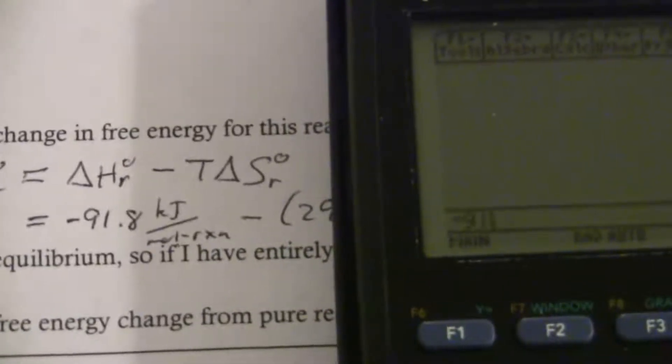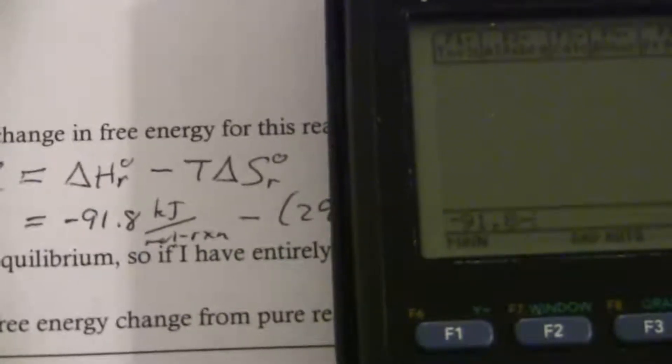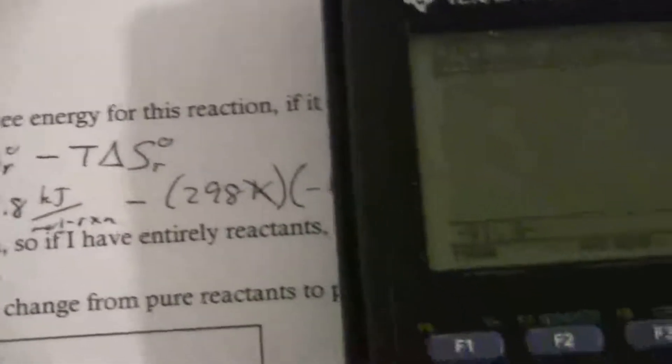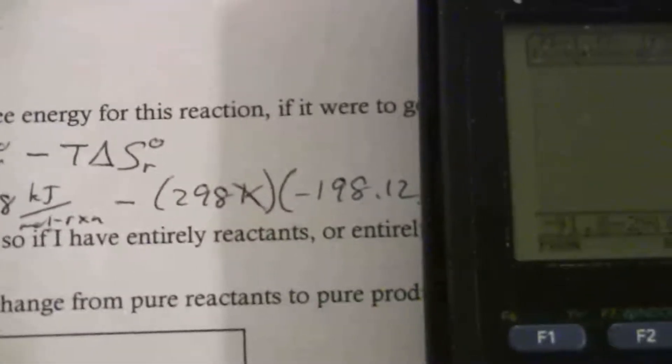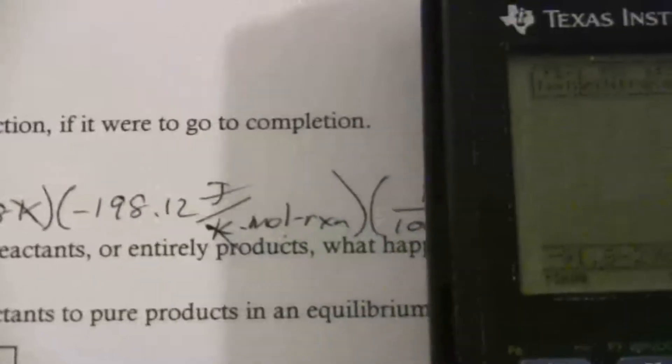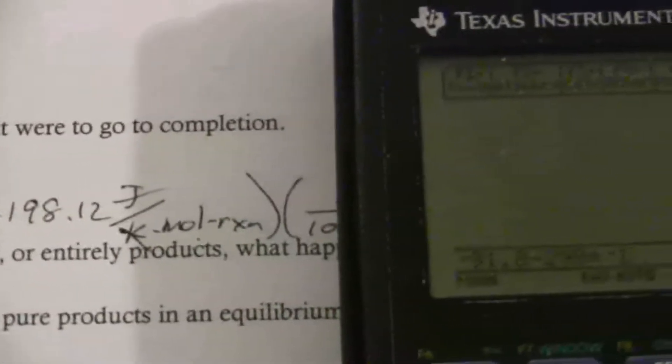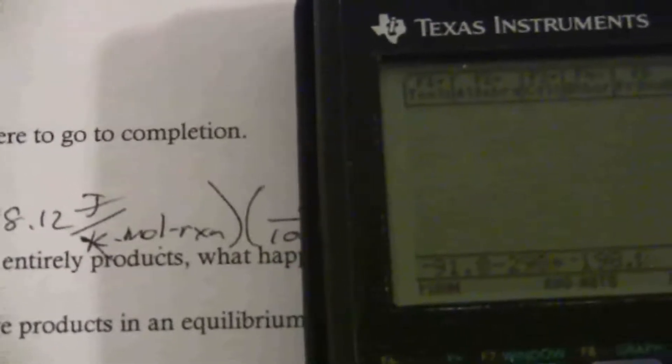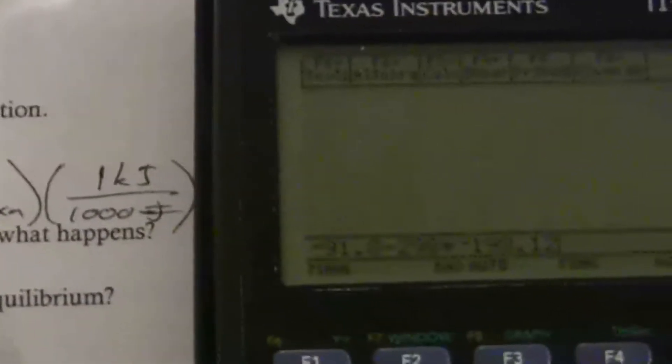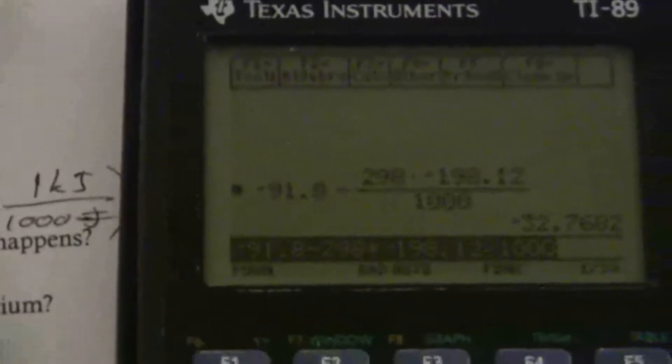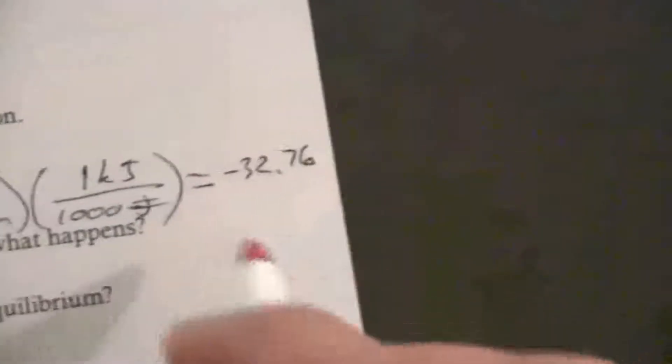So what I have is negative 91.8 minus 298 times negative 198.12 divided by 1,000. This equals negative 32.76. The units here are kilojoules per mole of the reaction.